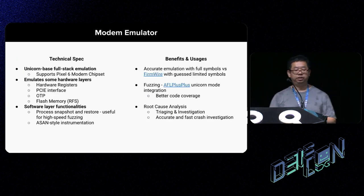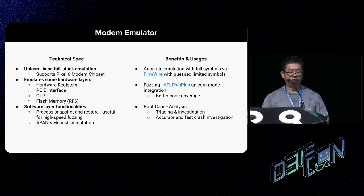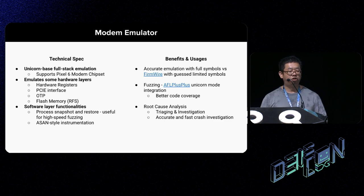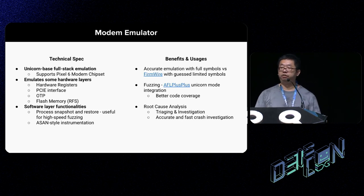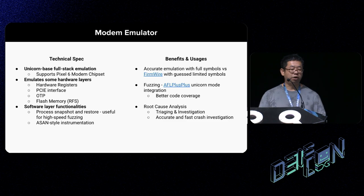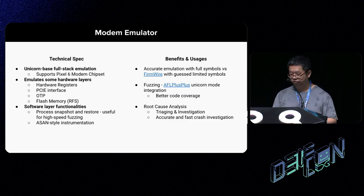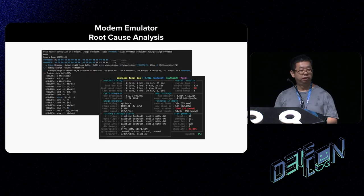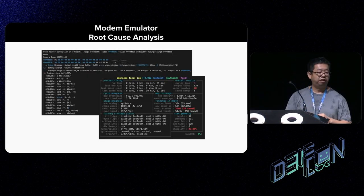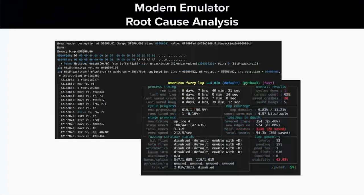Near the end of the engagement, inspired by a publication called Firmwire which does emulation-based fuzzing, we also created our own full-stack emulation using a QEMU-based approach. With hardware layers added, we can drop in the firmware binary and emulate parts of the functions, which is great for root cause analysis and debugging crashes. When we throw in a crash test input discovered from the host-based fuzzer, it gives us more information on the memory layout and details we couldn't get from the host-based fuzzer alone.